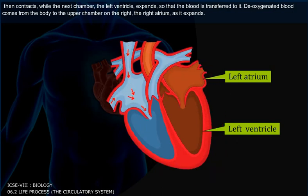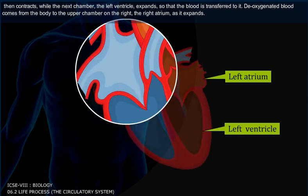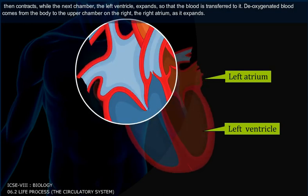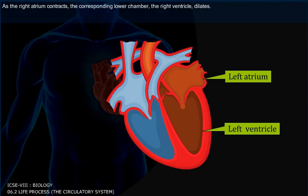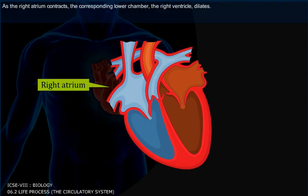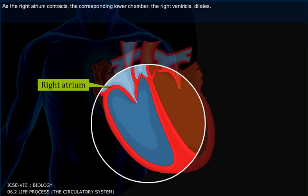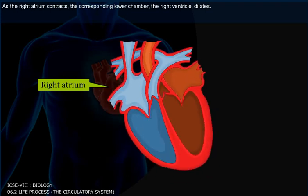Deoxygenated blood comes from the body to the upper chamber on the right, i.e. the right atrium, as it expands. As the right atrium contracts, the corresponding lower chamber, the right ventricle, dilates.